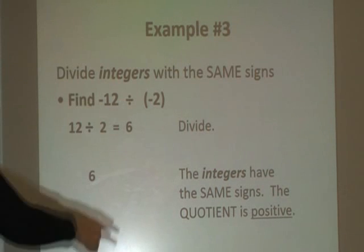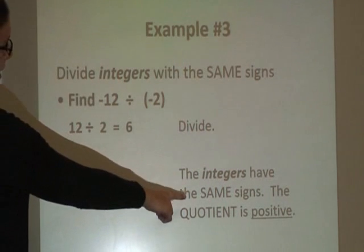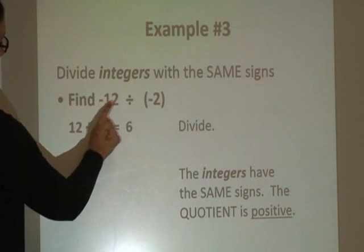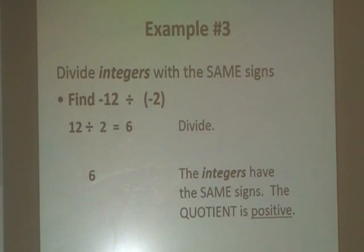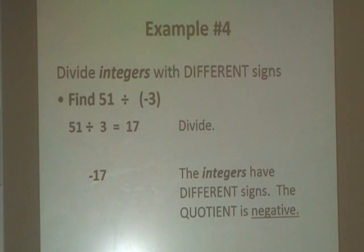And last, we'll check our sign. The integers in the problem have the same sign. They're both negative. So the quotient is positive. Same signs, positive. And one more example.